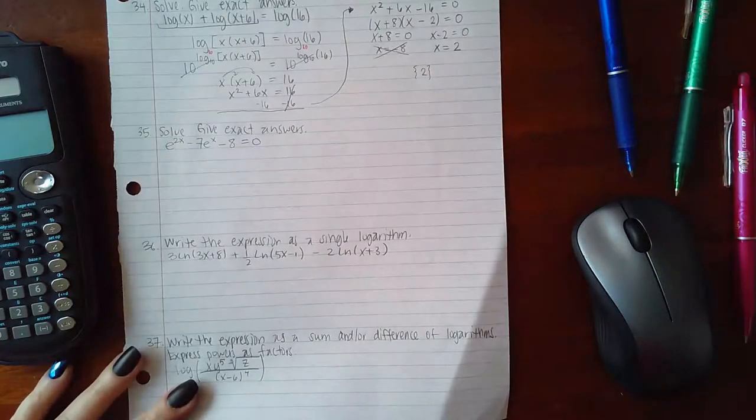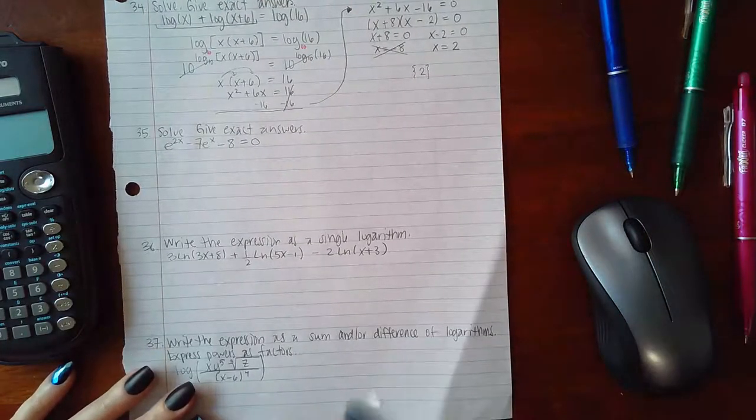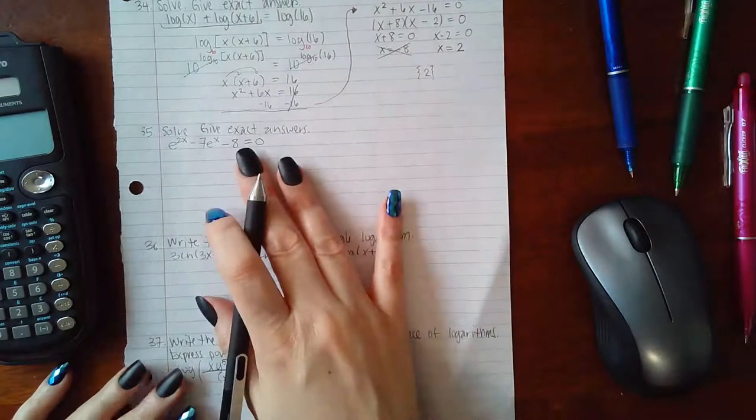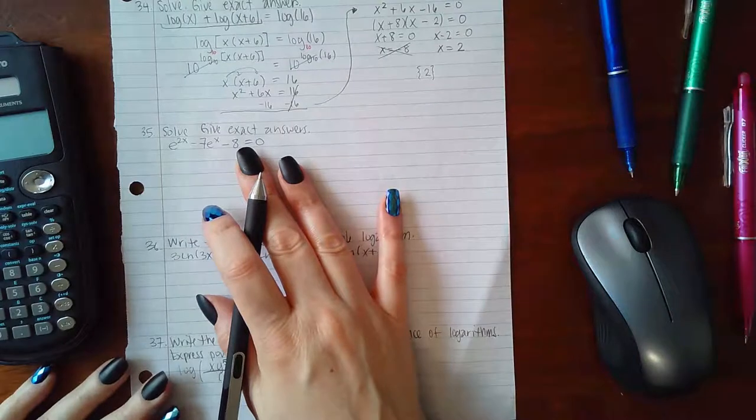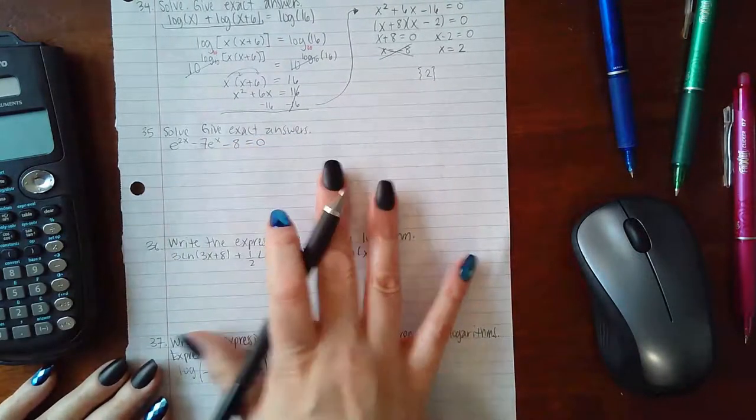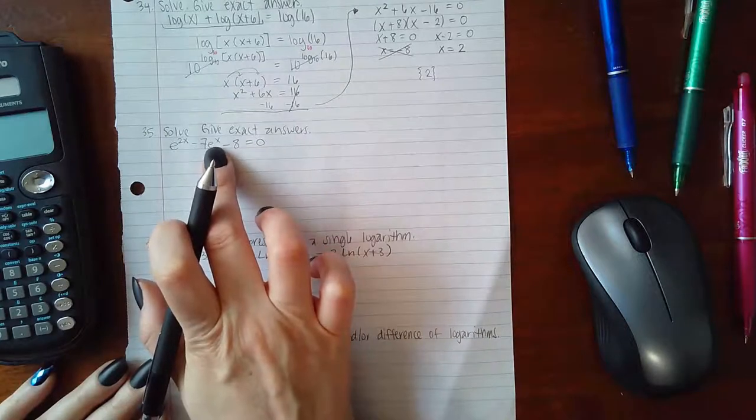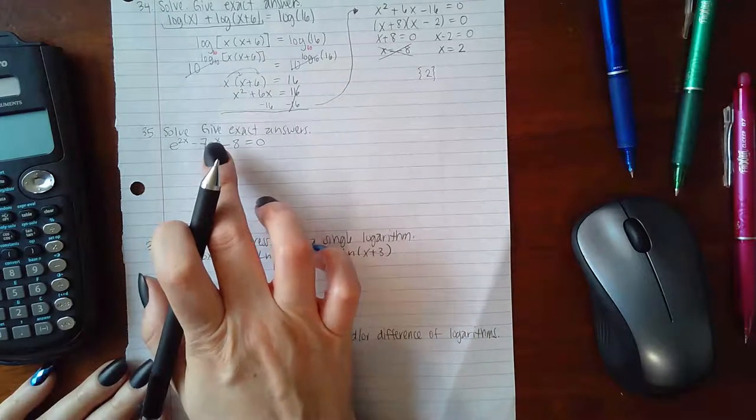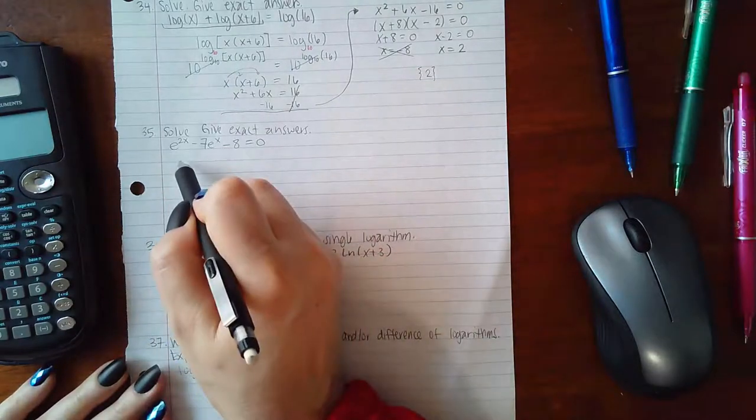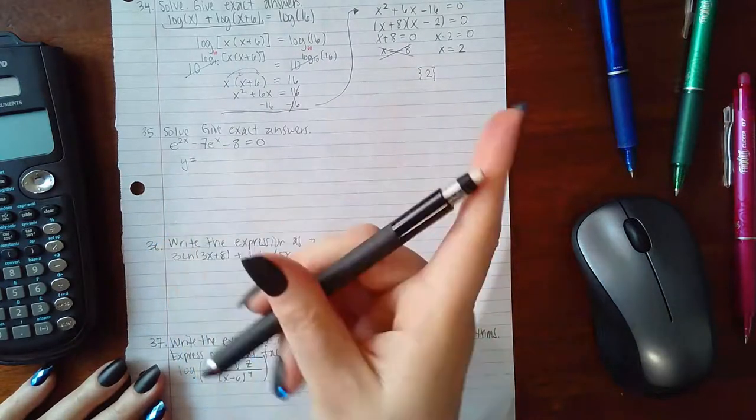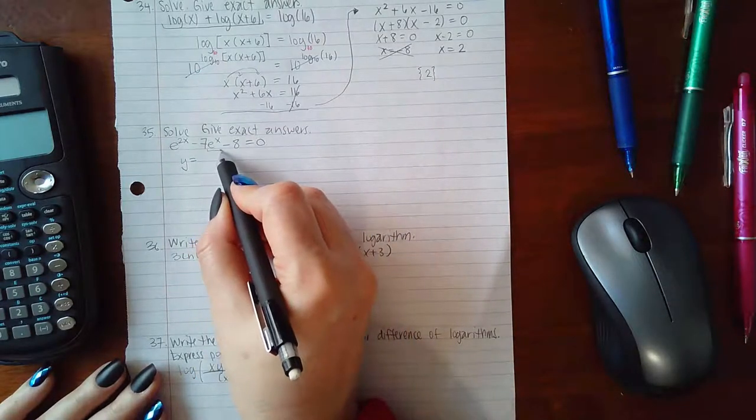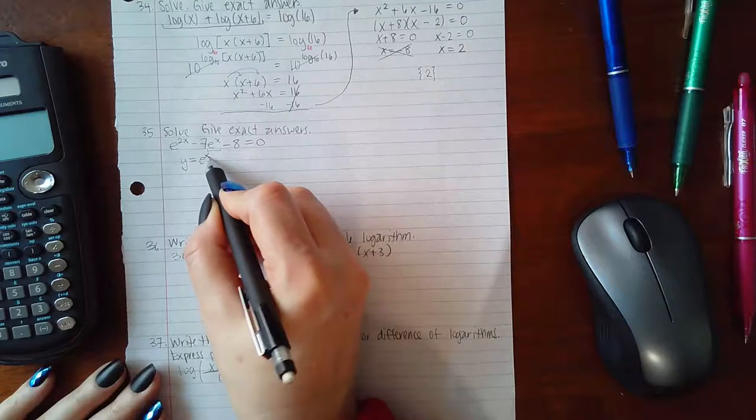Let's move on to number 35. Give exact answers. This one is going to require us to use some substitution. Whenever you're doing substitution, use the middle variable term, middle variable factor as your substituting variable. I'm going to use y as my other variable. I'm going to use the middle variable factor here, which is e to the x.